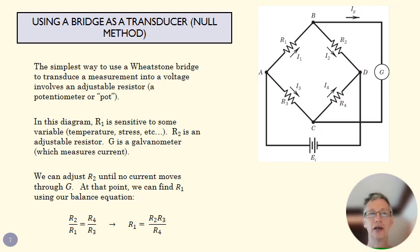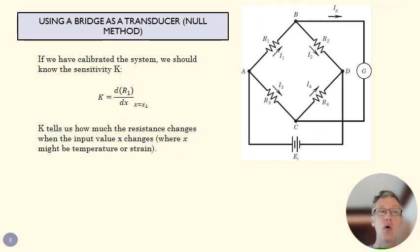If we know what R1 is and we know the sensitivity of our system, then we can figure out the change in temperature or strain. So that sensitivity of a Wheatstone circuit is going to be how much the change of resistor one changes with whatever it is that we're measuring. So how much does the resistance of our sensor change when we have a temperature change of 10 degrees? That's our sensitivity.